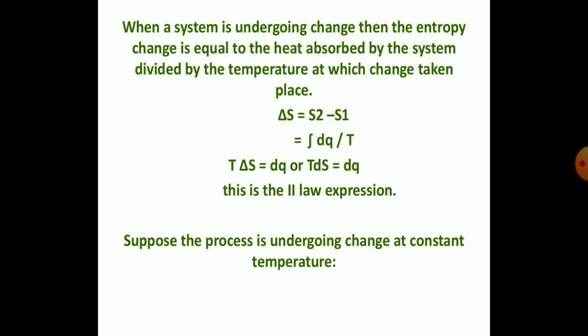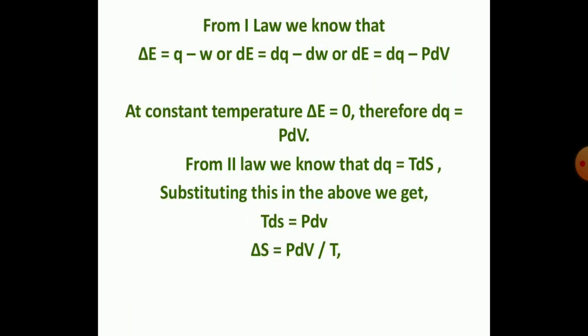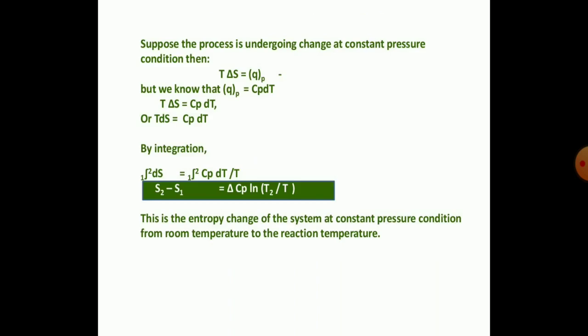This is the law of expansion. If a process undergoes change at constant temperature, from the law of change we know that substituting the above values, the change in entropy equals PdV divided by T. If the process undergoes change at constant pressure, integrating the above equation gives S2 minus S1 equal to the change in specific heat multiplied by ln(T2/T1).